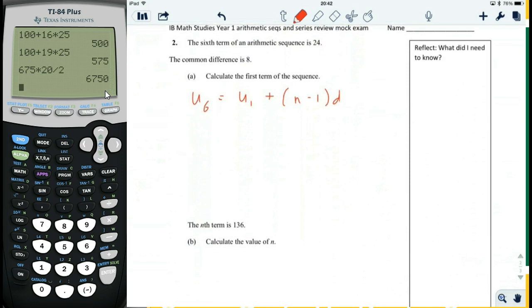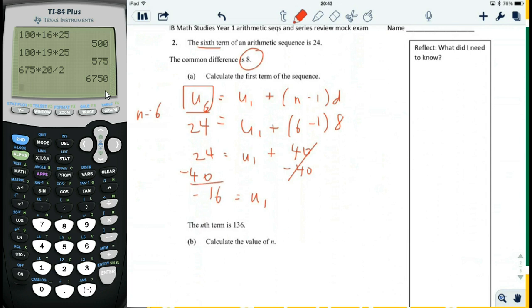On to problem 2. The sixth term is equal to the first term plus n minus 1 times d. Common difference is 8. We're talking about the relationship between the sixth term and the first term, but now it's kind of reversed. Usually we know the first term, we don't know the nth term. Now we know the sixth term, we don't know the first term. So we're going to put 24 in for U6, and U1 we don't know yet. Now we do know that 24 is the sixth term, so n is 6. So we're going to put 6 minus 1 here, which gives us 24 equals U1 plus 5 times 8. 5 times 8 is 40. Then we're going to subtract 40 from both sides. That gives us U1 equals negative 16. That's the answer to the first part. The first term is negative 16.